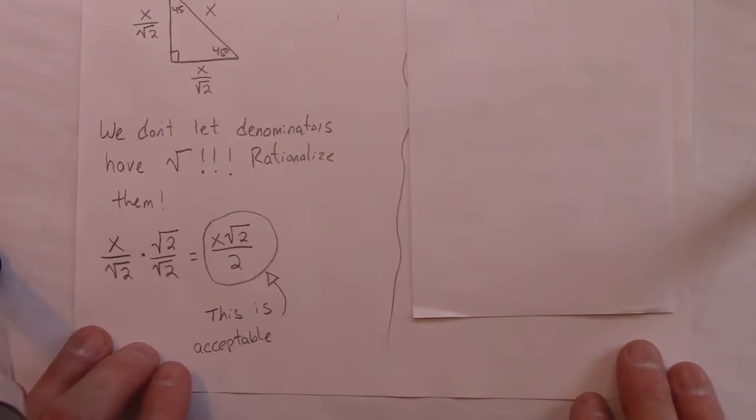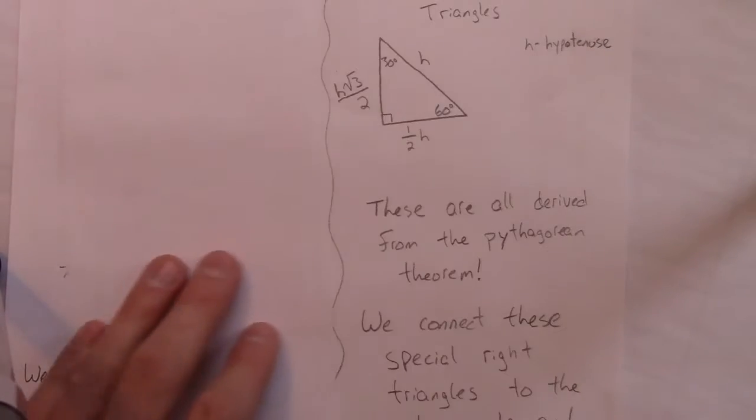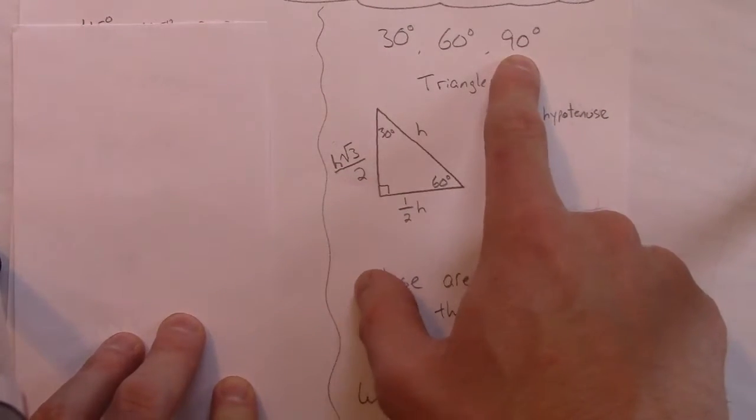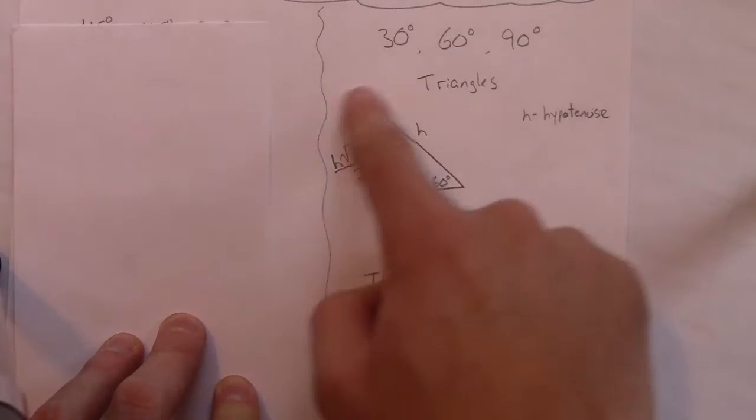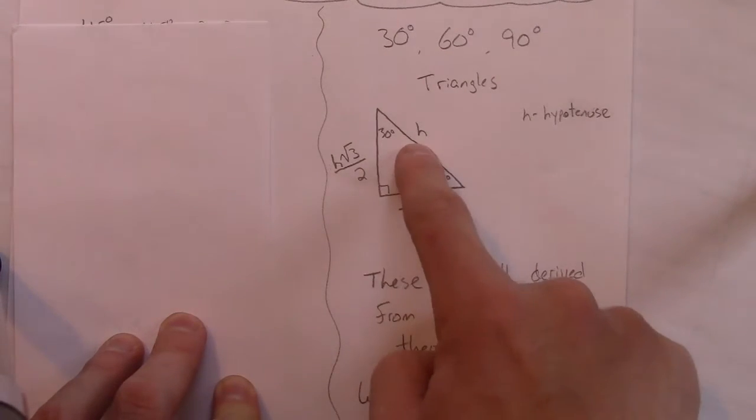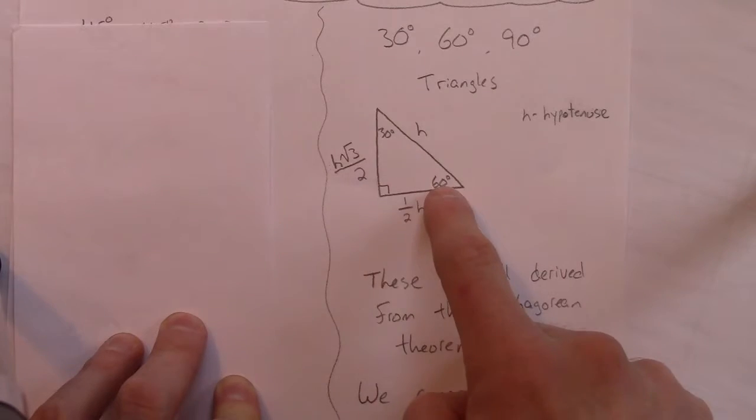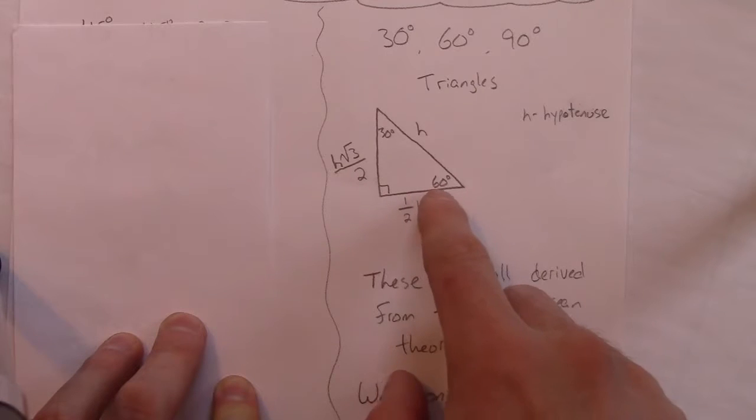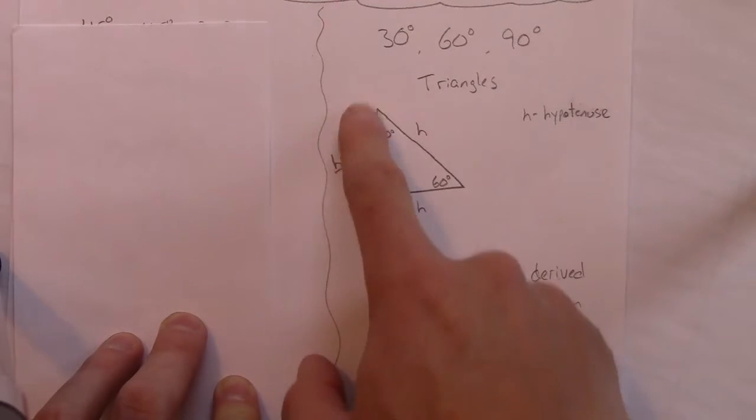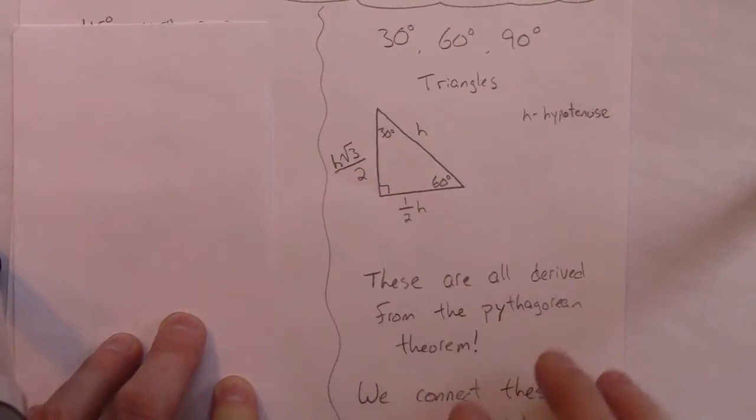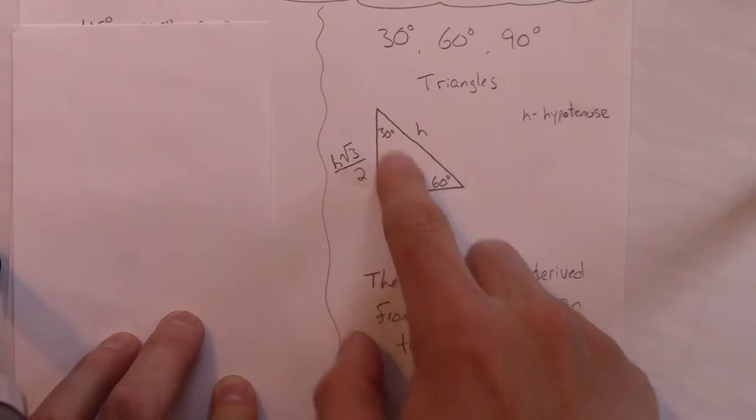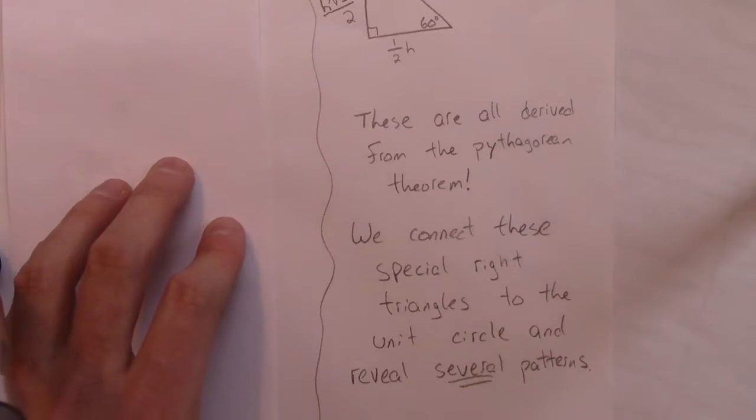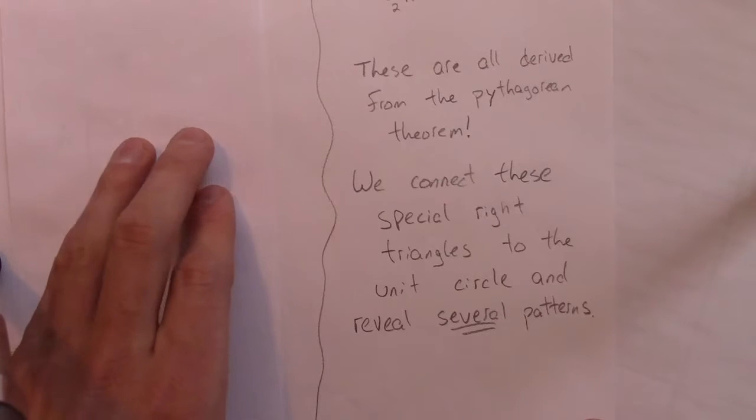There's another special right triangle that will show up, its pattern will show up inside the unit circle. And that is the 30, 60, 90 triangles. All right, so here's an example of what that looks like. Again, here's the hypotenuse opposite the 90 degree. So then you have a 30 degree angle and a 60 degree. And since we already talked about opposite sides of angles in SOHCAHTOA, we can do that again. So opposite the 60 degree will be, this side would be equal to h times the square root of 3 over 2. And opposite the 30 degree will just be one half of the hypotenuse. All right, so they're all derived from the Pythagorean theorem. We're not going to derive those.